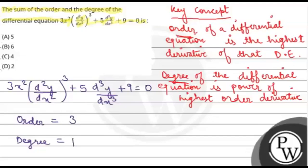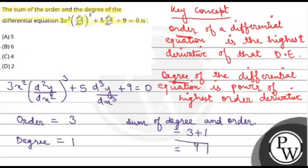They have asked the sum of the order and degree of the differential equation. So the sum of degree and order of the given differential equation will be 3 plus 1. So the final answer for this question is option C, which is 4.